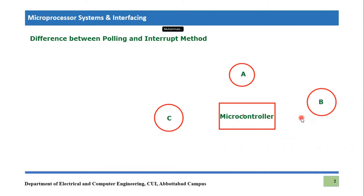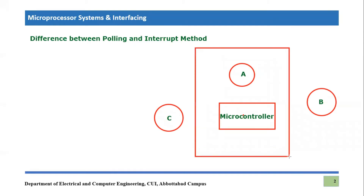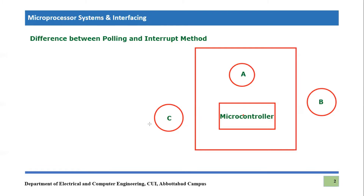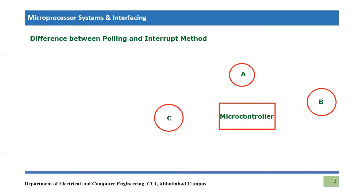The microcontroller will go to device B and check if it needs service. If it doesn't require service, the microcontroller will go to device A and check its status. Then it will go to device C. This is the polling method. During this polling procedure, if any device — for example device A — requires service, the microcontroller will neglect the other two devices B and C and work only on device A until it is served.